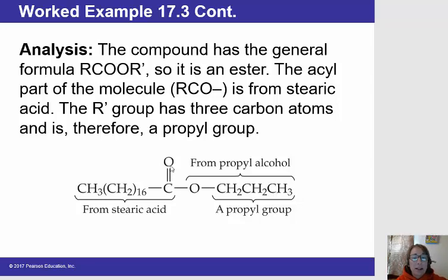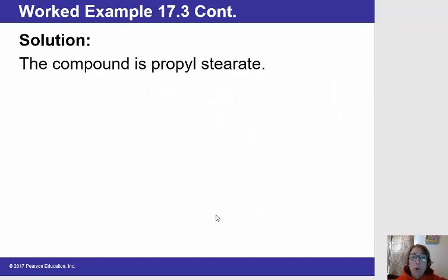And then the part derived from our acid has the carbonyl group. So there are one, two, plus sixteen. So eighteen carbons in a saturated chain. And we remember that from previously in the chapter that that's stearic acid. So the name of this is going to be propyl stearate.